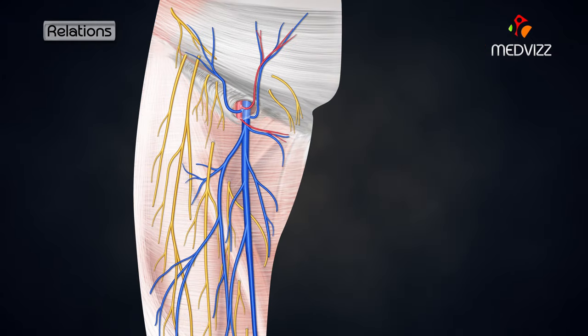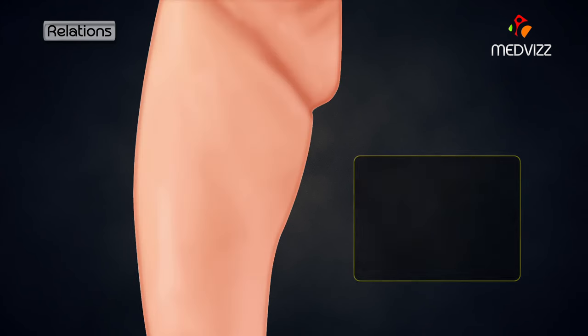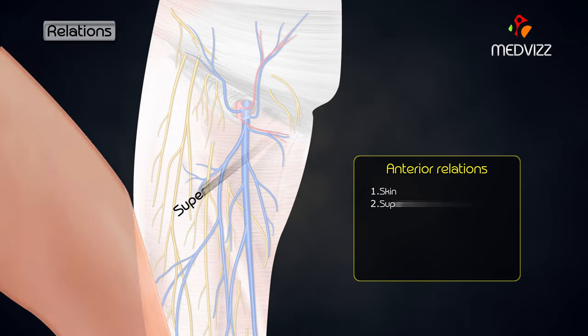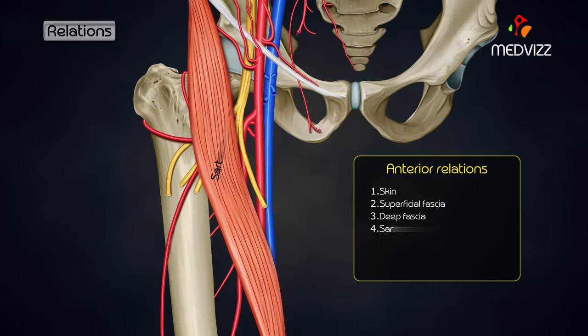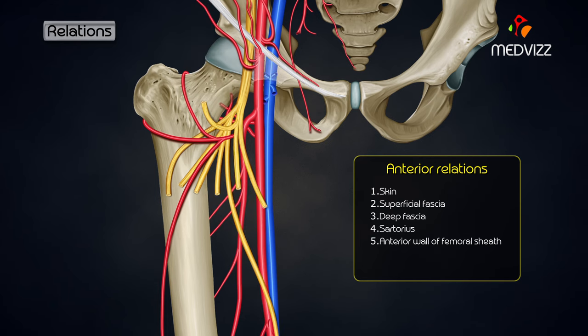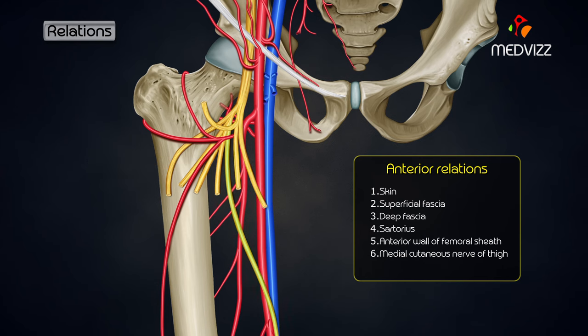Now let us talk about the relations of the femoral artery. First, the anterior relations: skin, superficial fascia, the deep fascia, the sartorius, the anterior wall of the femoral sheath, and the medial cutaneous nerve of the thigh, as well as the saphenous nerve, which crosses from lateral to medial.